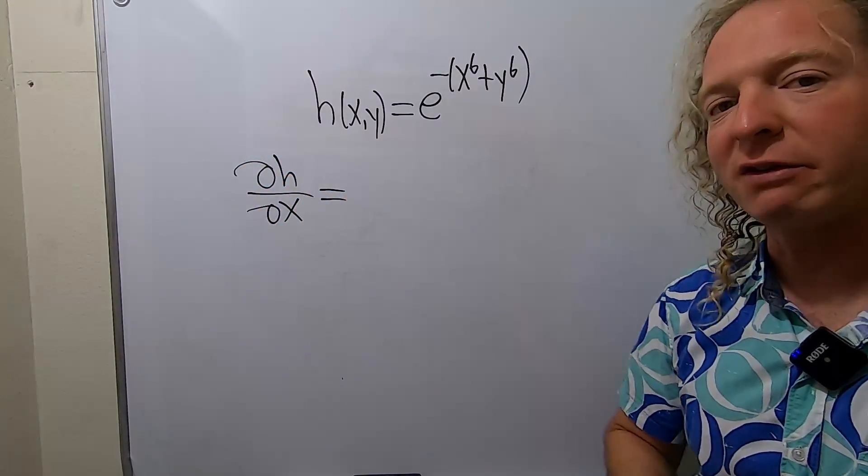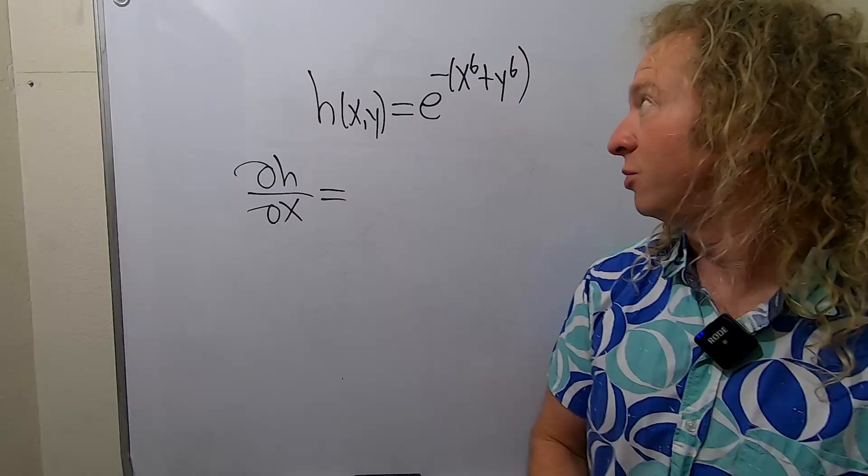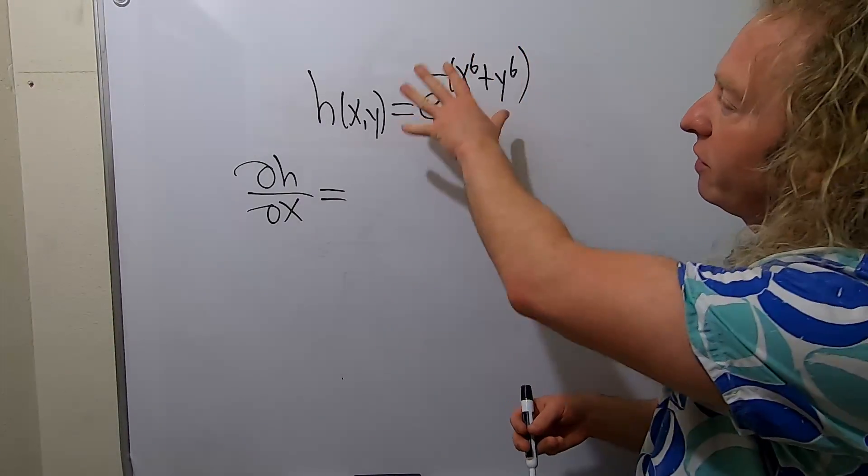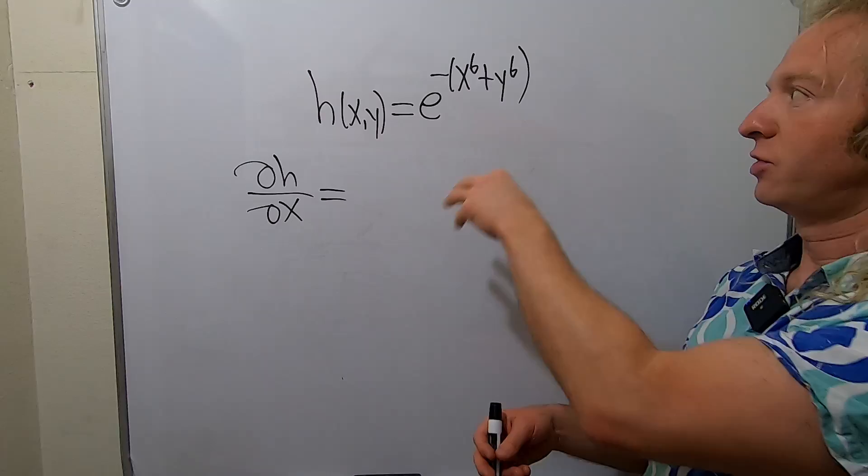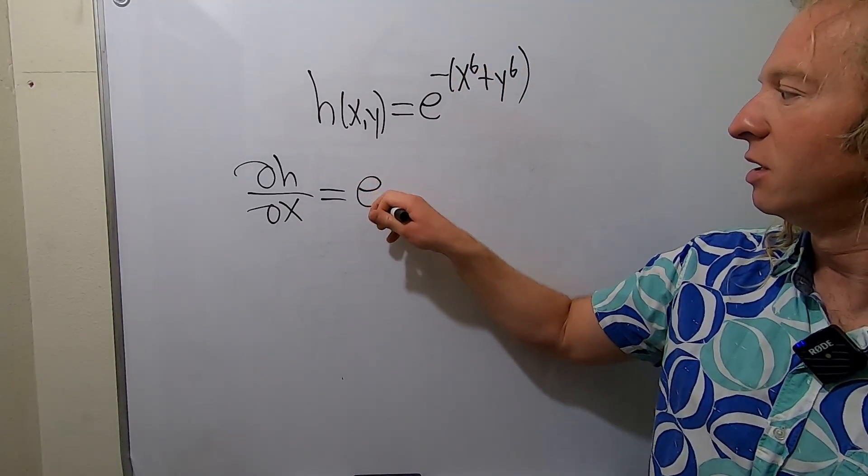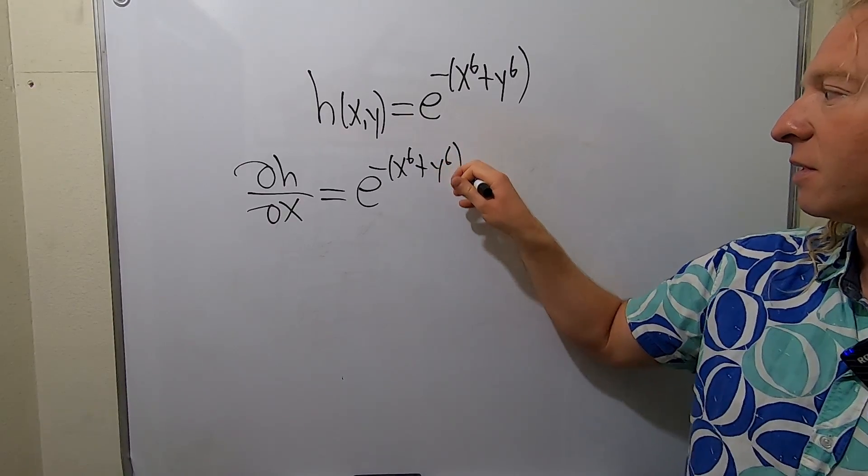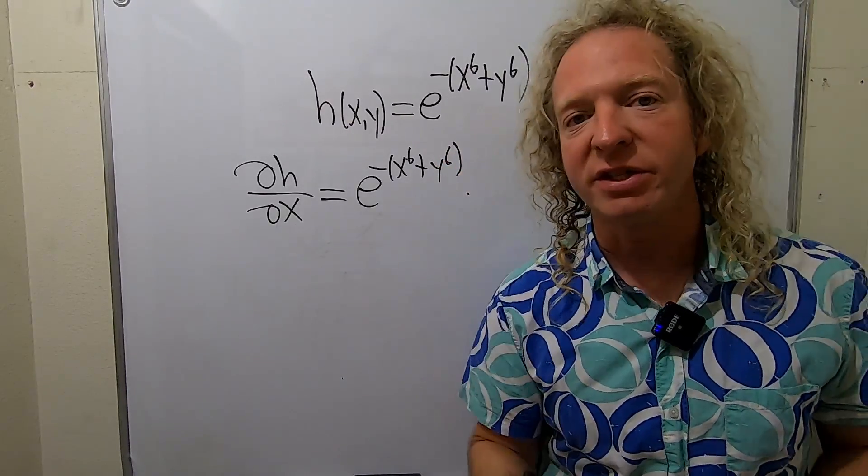This is the partial derivative of H with respect to X. The derivative of e^x is e^x. When we take this derivative, we do have to use the chain rule. It's just going to be e^(-x^6 + y^6) times the derivative of the inside.